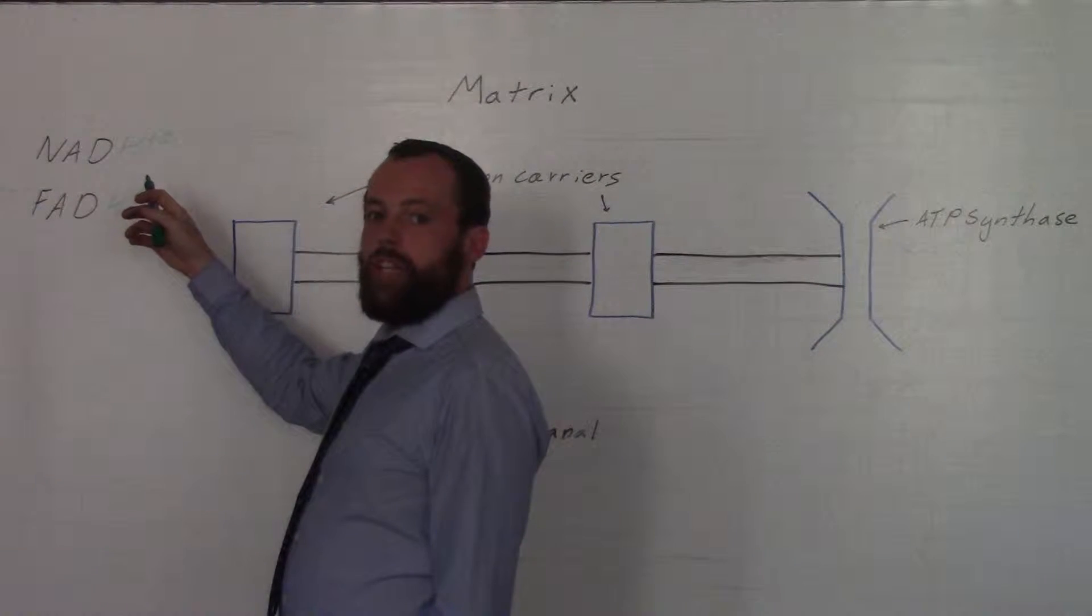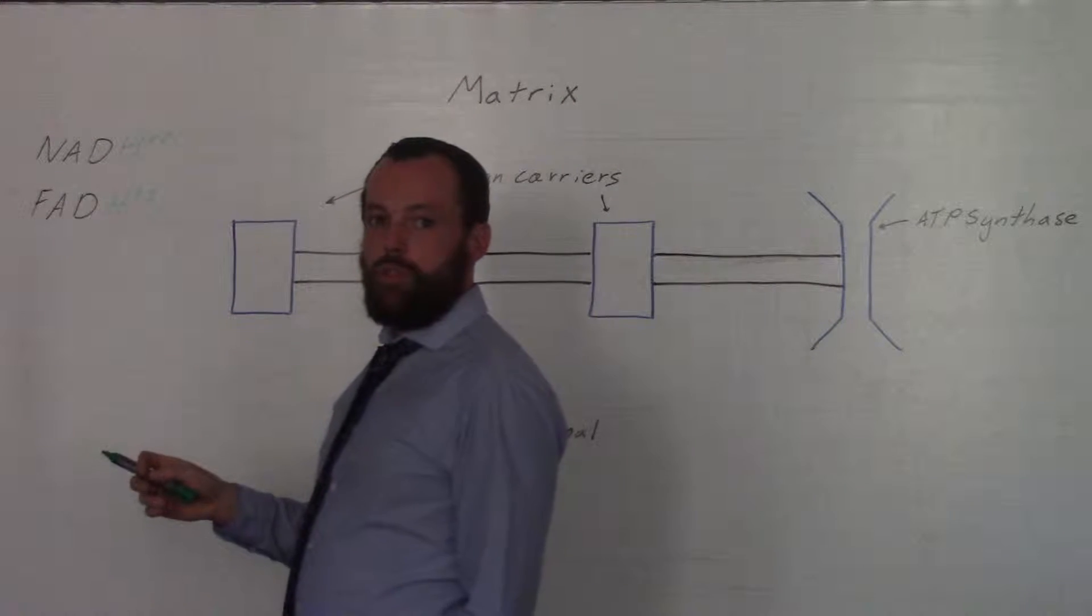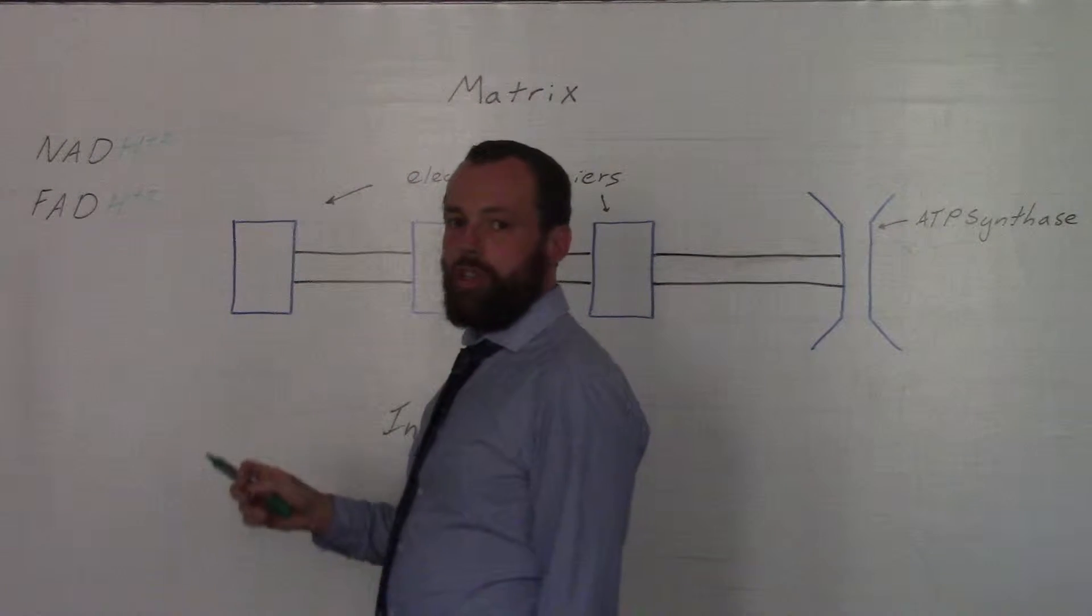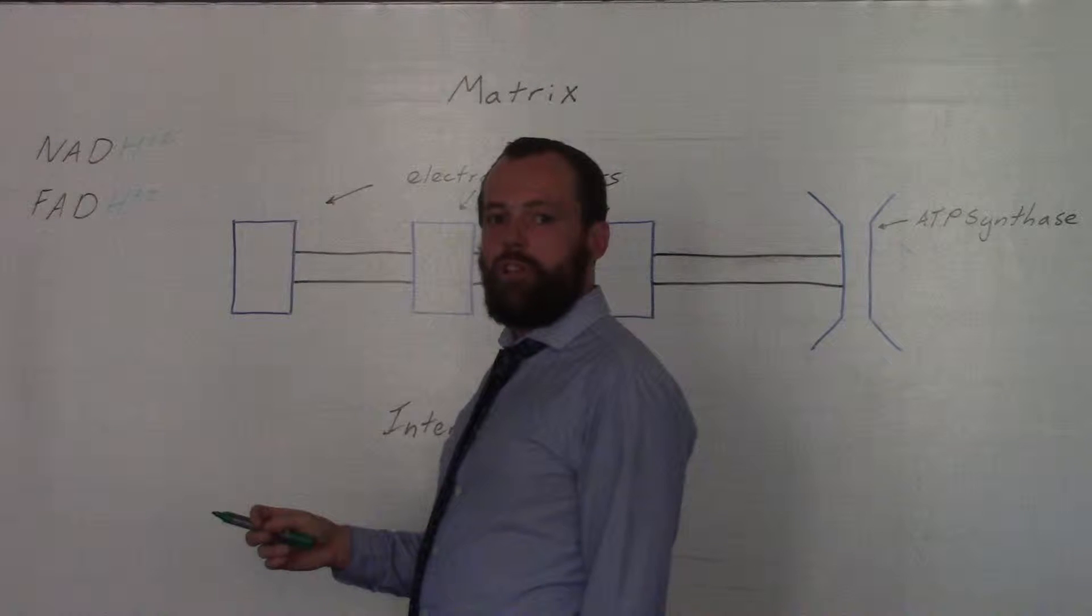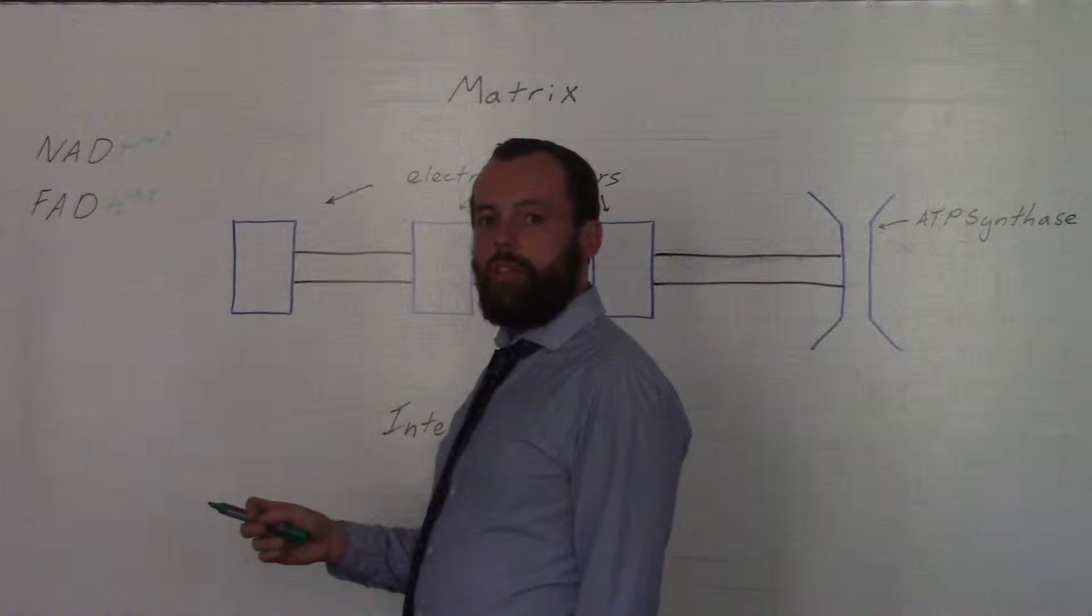Firstly, NADH or reduced NAD, and FADH, reduced FAD, enter the matrix from previous stages of respiration, being glycolysis and the Krebs cycle.